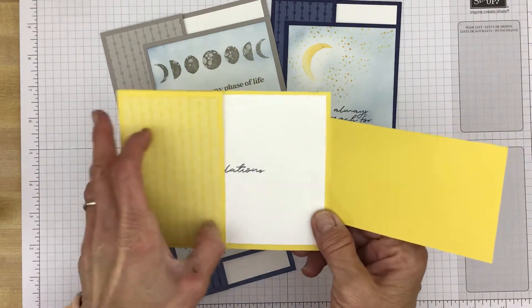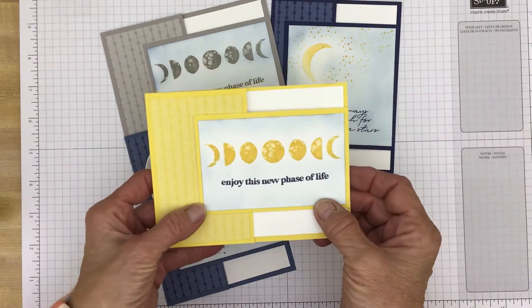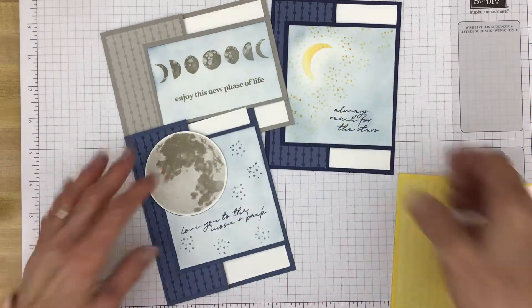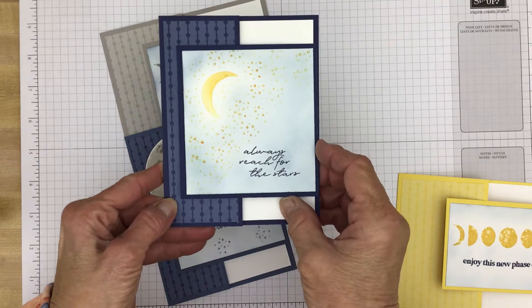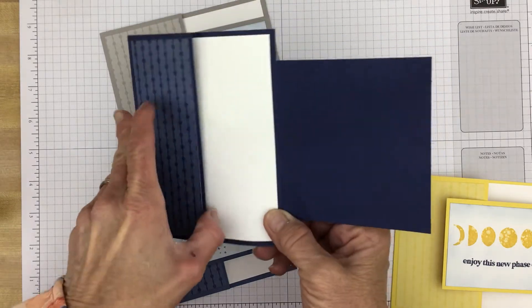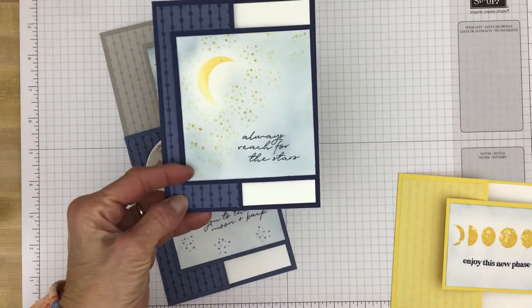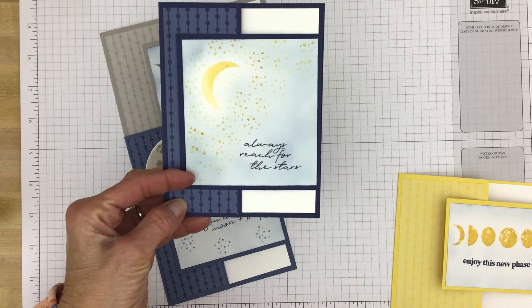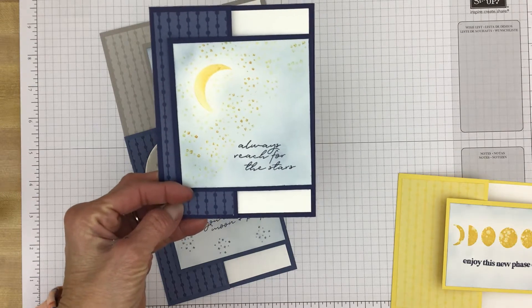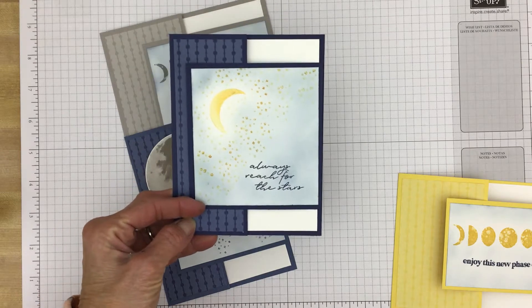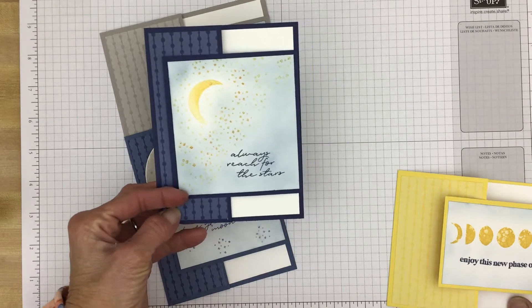Then the card opens up and there's your sentiment for the inside. Here's the portrait version. Always reach for the stars. I haven't put anything inside of this because I thought that would be maybe for a graduation or for someone who's about to start a new job, those kind of things. So I thought I would wait and see who I might send this to before I put something on the inside.